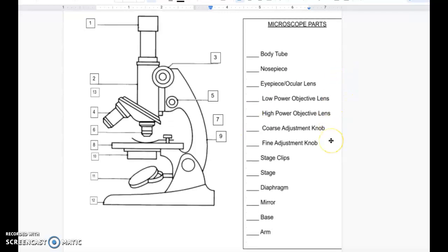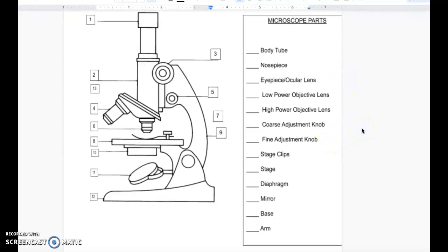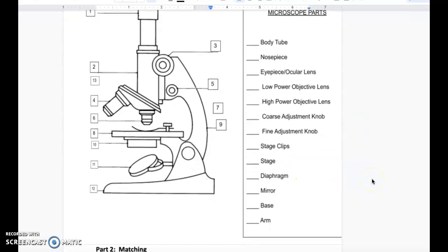The microscope parts are: body tube, nosepiece, eyepiece/ocular lens, low power objective lens, high power objective lens, coarse adjustment knob, fine adjustment knob, stage clips, stage, diaphragm, mirror, base, and arm.